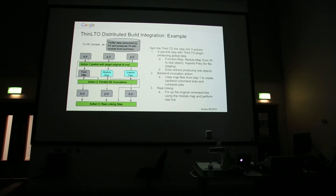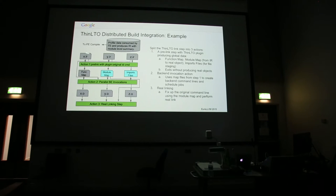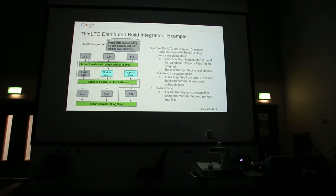Here's a picture of how we're planning to do this with the build system. We're going to split the final link into a few different cases. The thin linker plugin will generate the combined function map. In addition, it will compute the import files — these pre-computed dependencies — and also compute a map from the IR to the final link objects, and stop there. The link terminates without actually generating real object files.